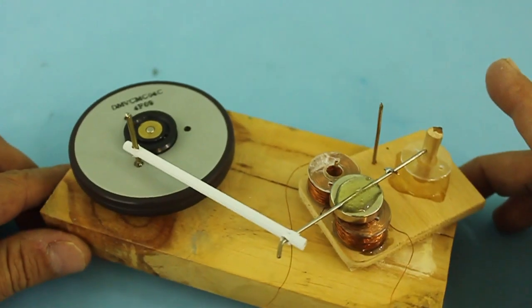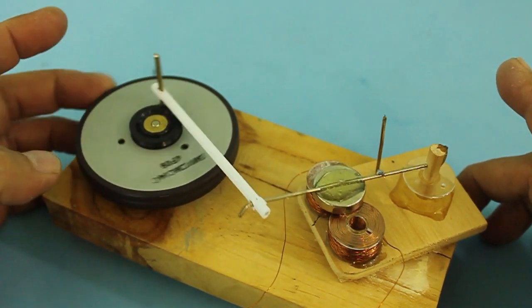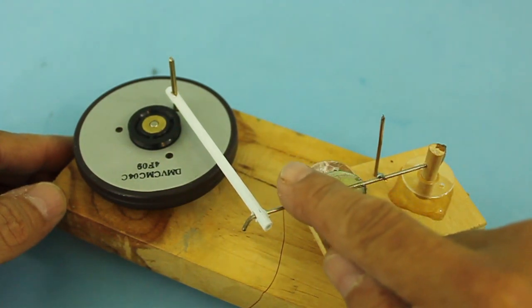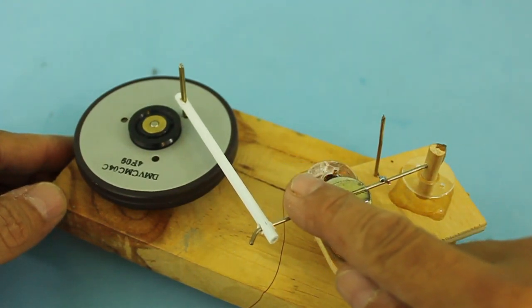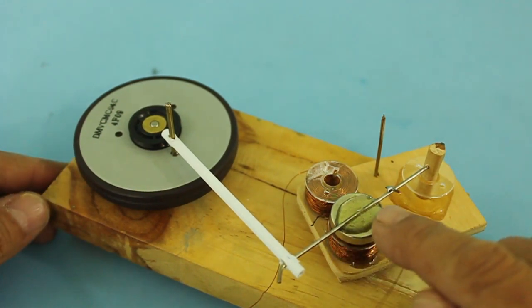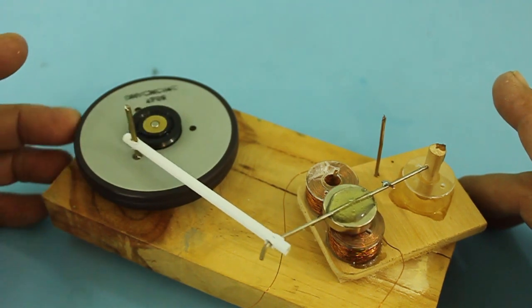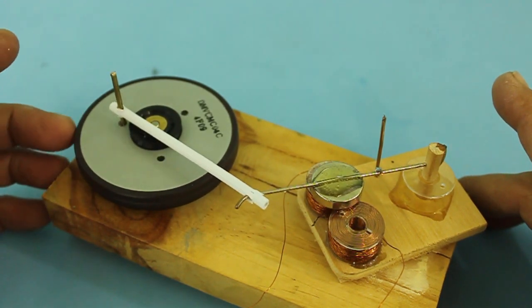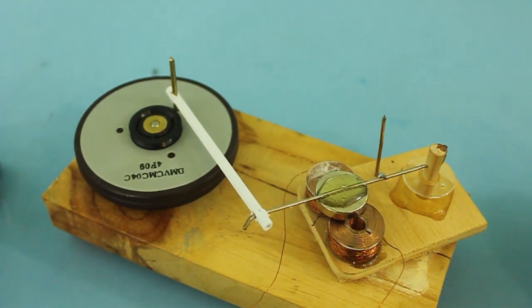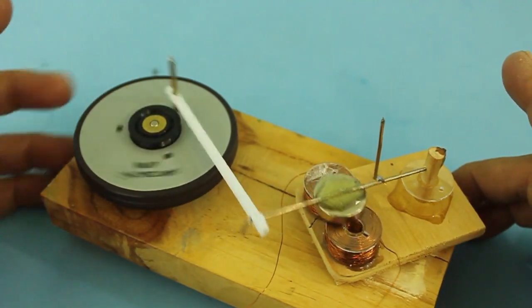Now the way in which the motor works is the following: when the flywheel is in this position we apply power to the actuator so that it will make the flywheel turn. And now at this point we have to disconnect power to the actuator and the flywheel will move because of its inertia until we get again at this point and we apply power again and so on.